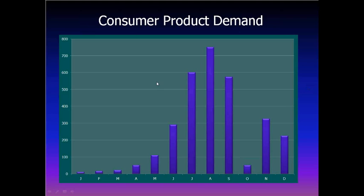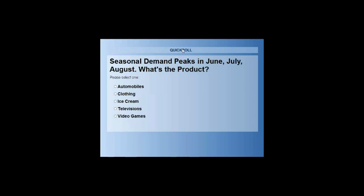With that information, I'm going to put you all to work to answer a question. This poll is about seasonal demand — talking about the chart I just showed you. With seasonal demand that peaks in June, July, and August, what's the product? You've got five options: automobiles, clothing, ice cream, televisions, or video games. Take a minute and click in what you think it is.